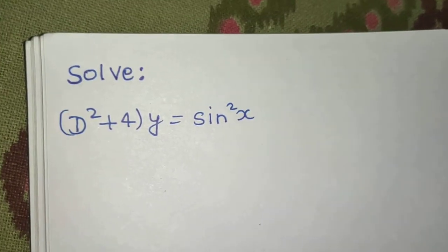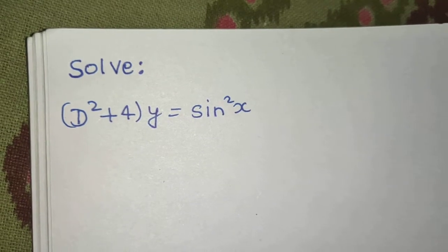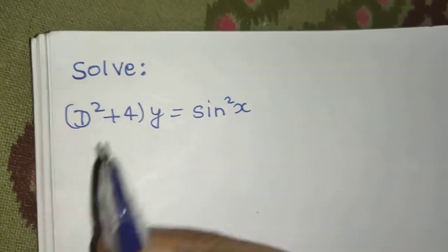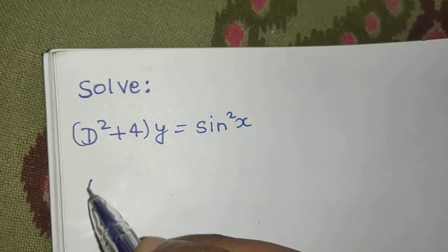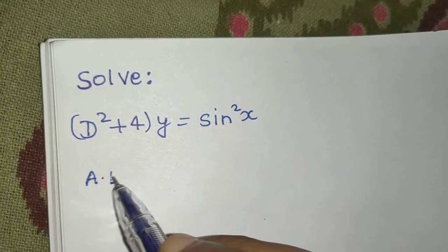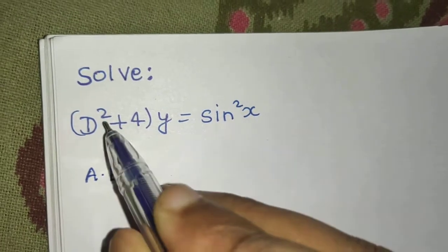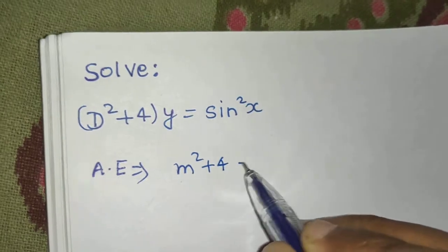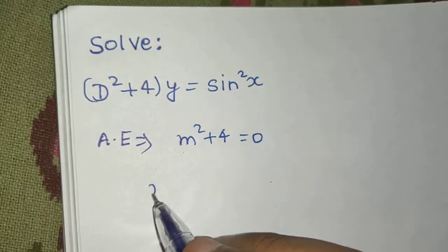In every question of linear differential equation with constant coefficient, there are certain steps which we need to follow in order to get the answer. So first step is always to write the auxiliary equation, which is simply just replace this d by m. So m square plus 4 and equate it to 0.